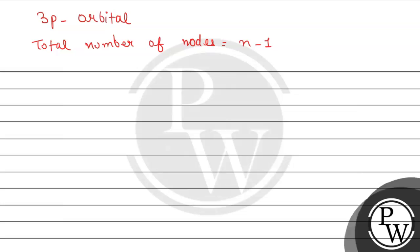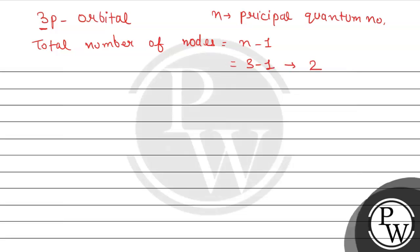Where n represents the principal quantum number, which represents the size of the orbital. So by this we can say 3 minus 1 means 2 total number of nodes present in the 3p orbital.